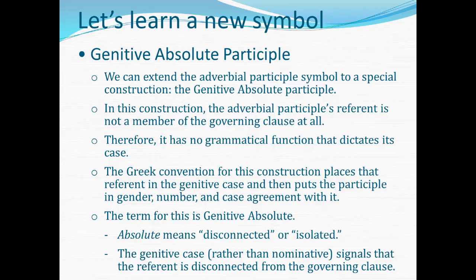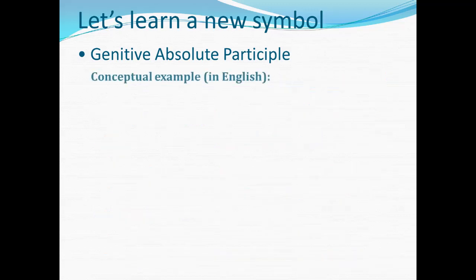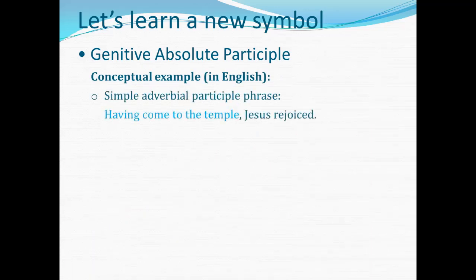Now all of this is probably about as clear as mud if you don't already understand these things, so we need some examples to bring some clarity to the discussion. We're going to start with some conceptual examples in English. Here would be a simple adverbial phrase: 'Having come to the temple' — there's our adverbial participle phrase in light blue — 'Jesus rejoiced.' The meaning is something like 'when he came to the temple, Jesus rejoiced,' but I've used a simple participle form in English, 'having come,' in order to approximate the Greek structure as closely as I can.